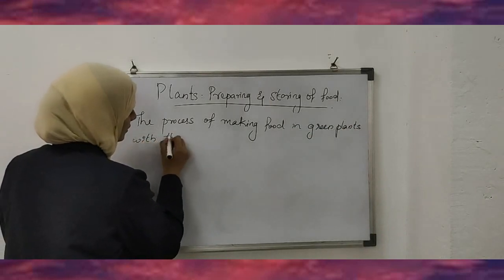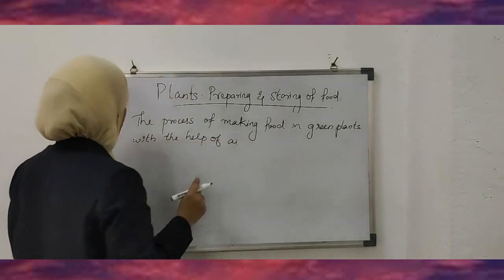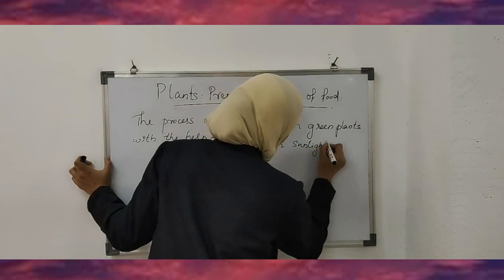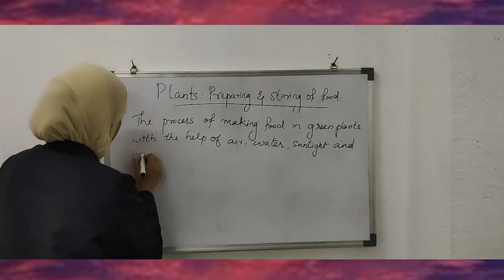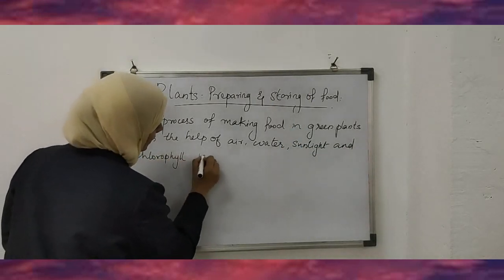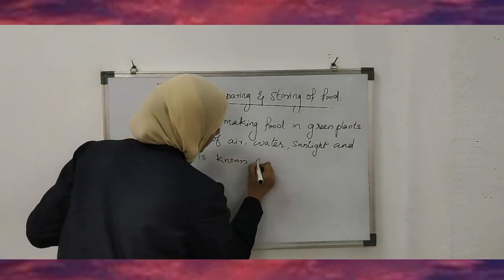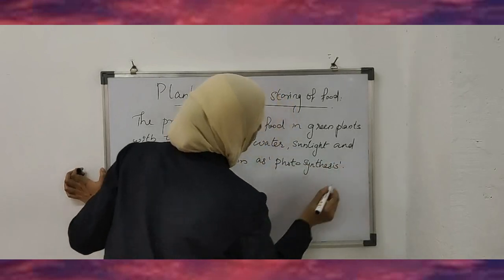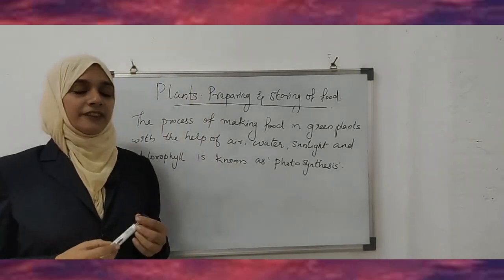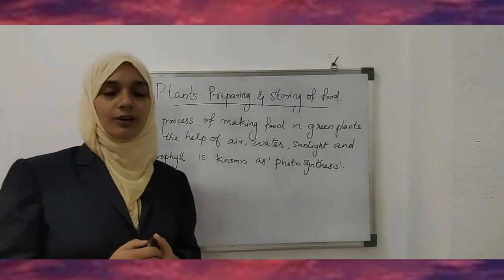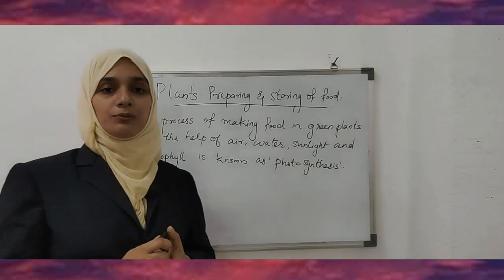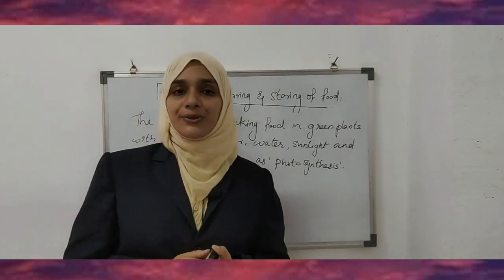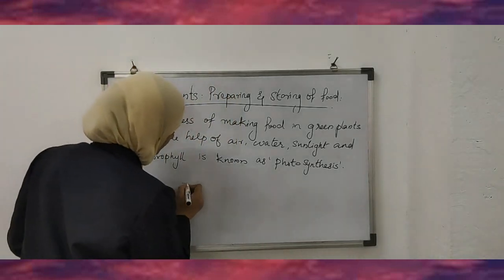Plants produce food with the help of air, water, sunlight, and chlorophyll. This chlorophyll absorbs sunlight, and with the help of sunlight, air — meaning carbon dioxide — and water combine to form carbohydrate and oxygen. This oxygen is expelled through the tiny pores.